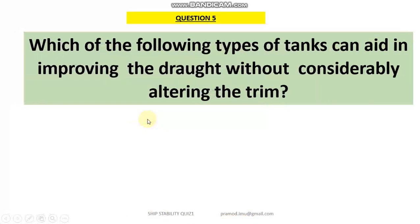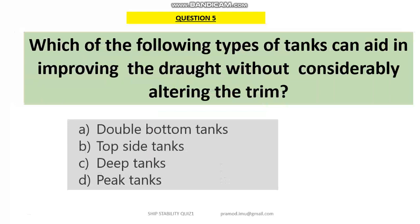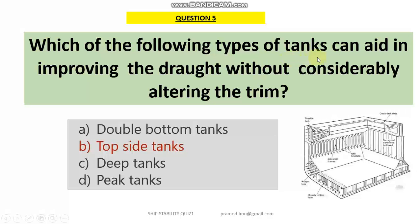Question 5: which of the following types of tanks can help in improving the draft without changing the trim? In bulk carriers we have topside tanks. When you fill these tanks with ballast water, you can actually change the draft without conceptually changing the trim. So topside tanks will be the answer.